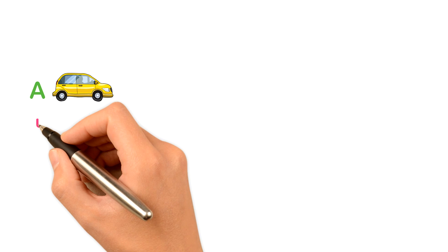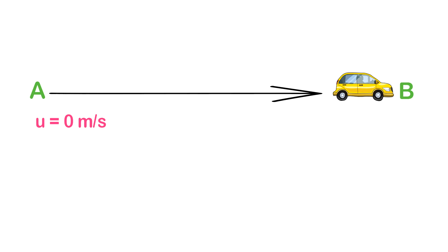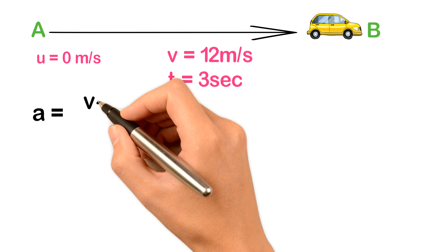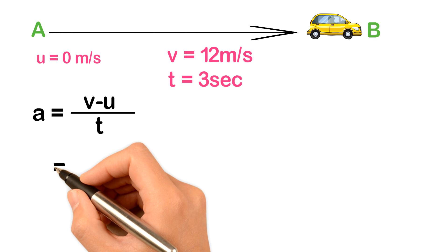Now let me tell you how we can calculate the acceleration of a body. If a car is standing at point A, we know the car is at rest and its initial velocity U is equal to zero meters per second. If the car moves to point B and gains a velocity of 12 meters per second in a time of 3 seconds, then we use the equation: acceleration equals V minus U divided by T, where V is final velocity, U is initial velocity, and T is time.